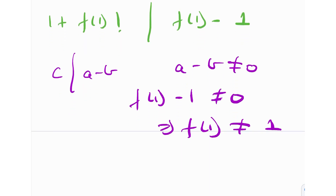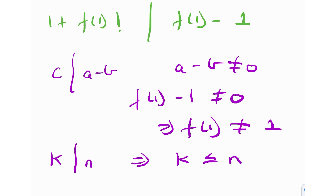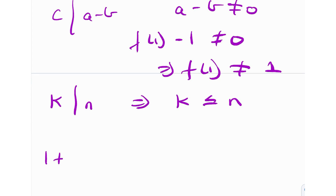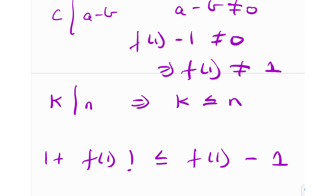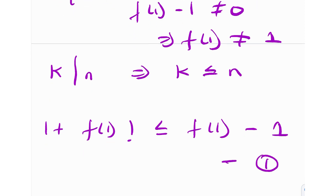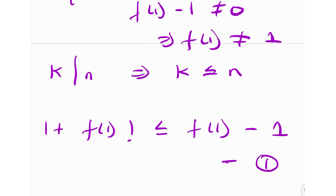I can also state that if a number k divides n, then k must be less than or equal to n. This is a very simple fact about divisibility. So from the result we have, (1 + f(1))! is less than or equal to f(1) − 1. Let me label that as equation number 1.